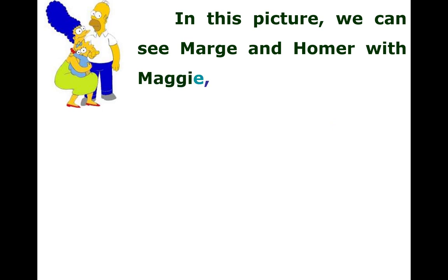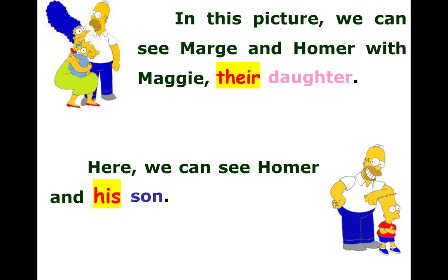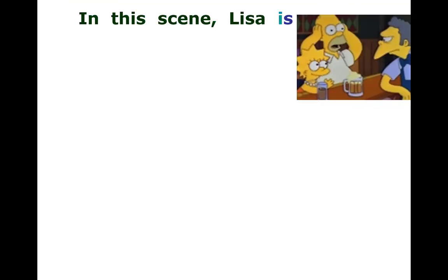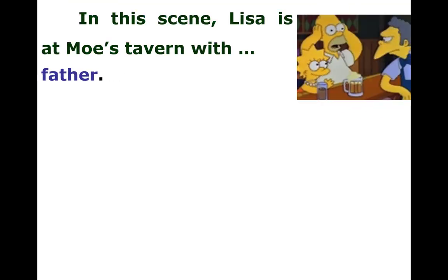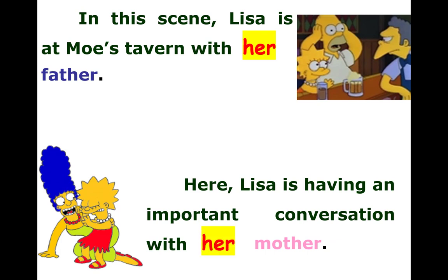In this picture we can see Marge and Homer with Maggie, their daughter. Here we can see Homer and his son. In this scene, Lisa is at Moe's Tavern with her father. And here, Lisa is having an important conversation with her mother.